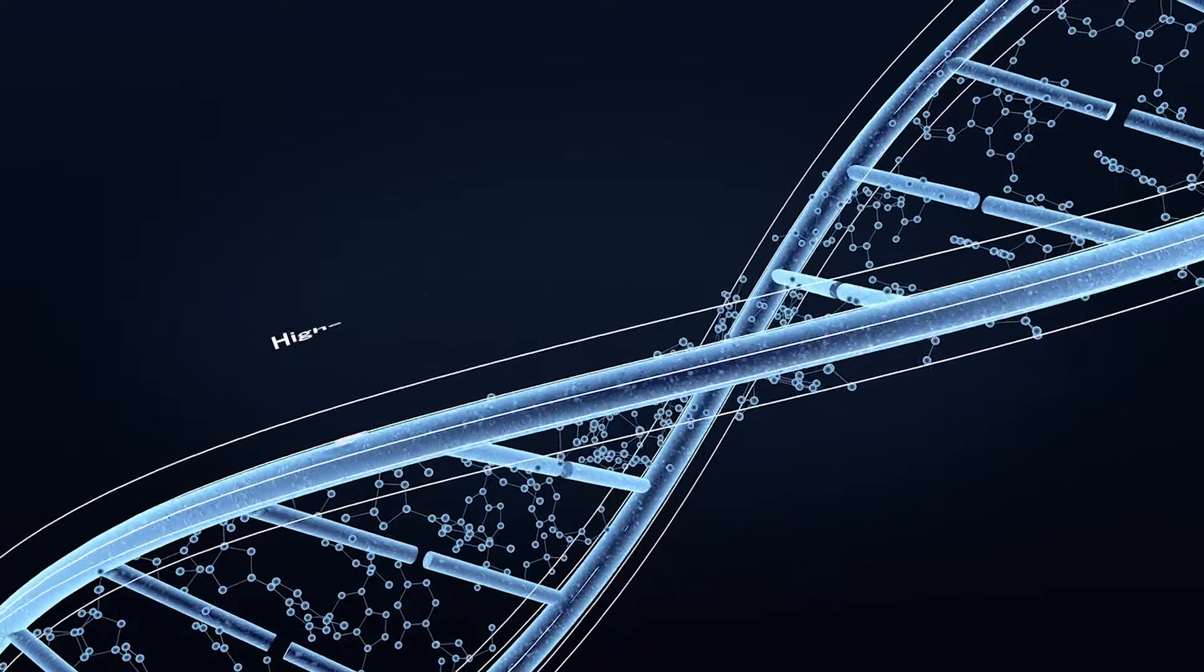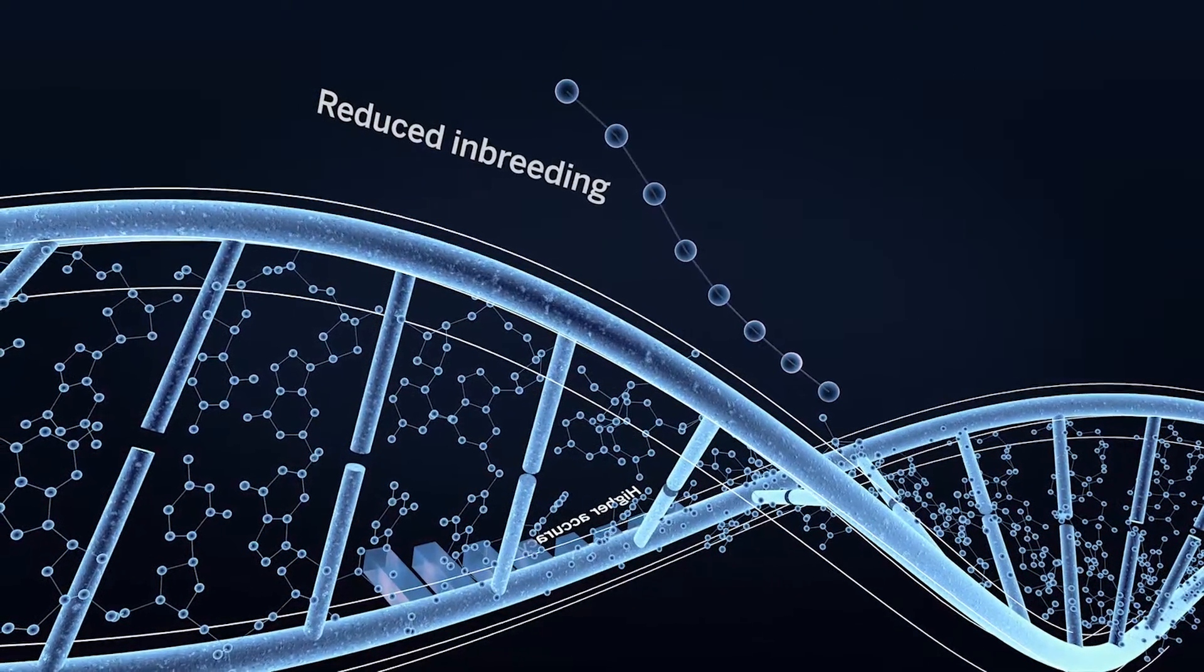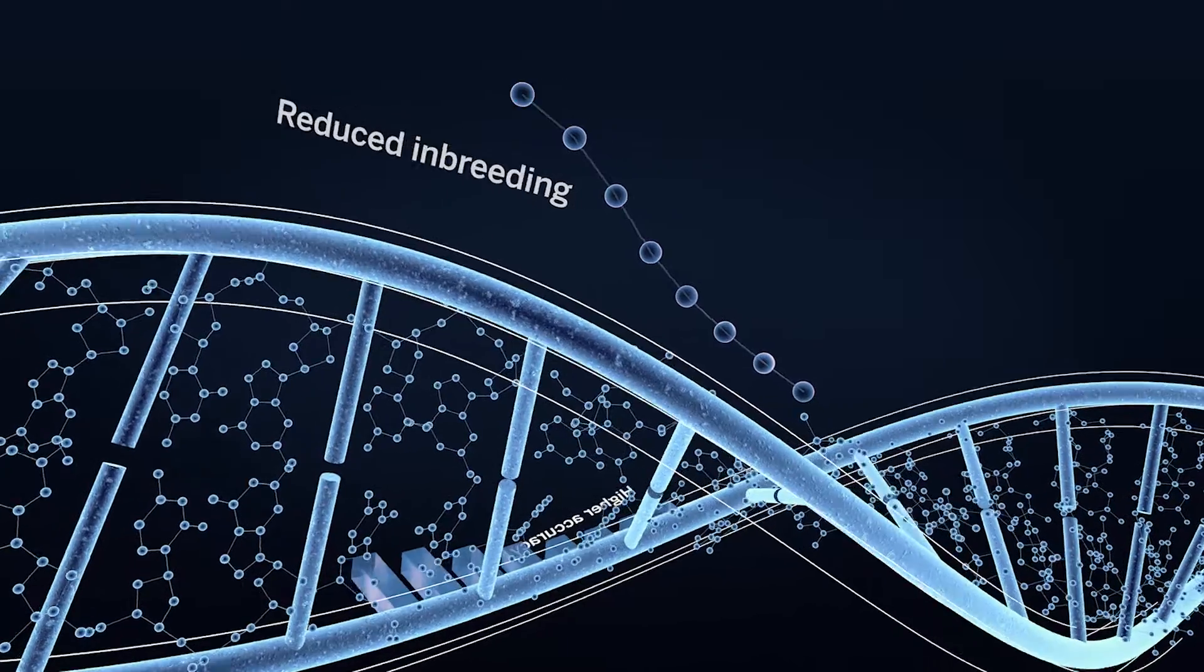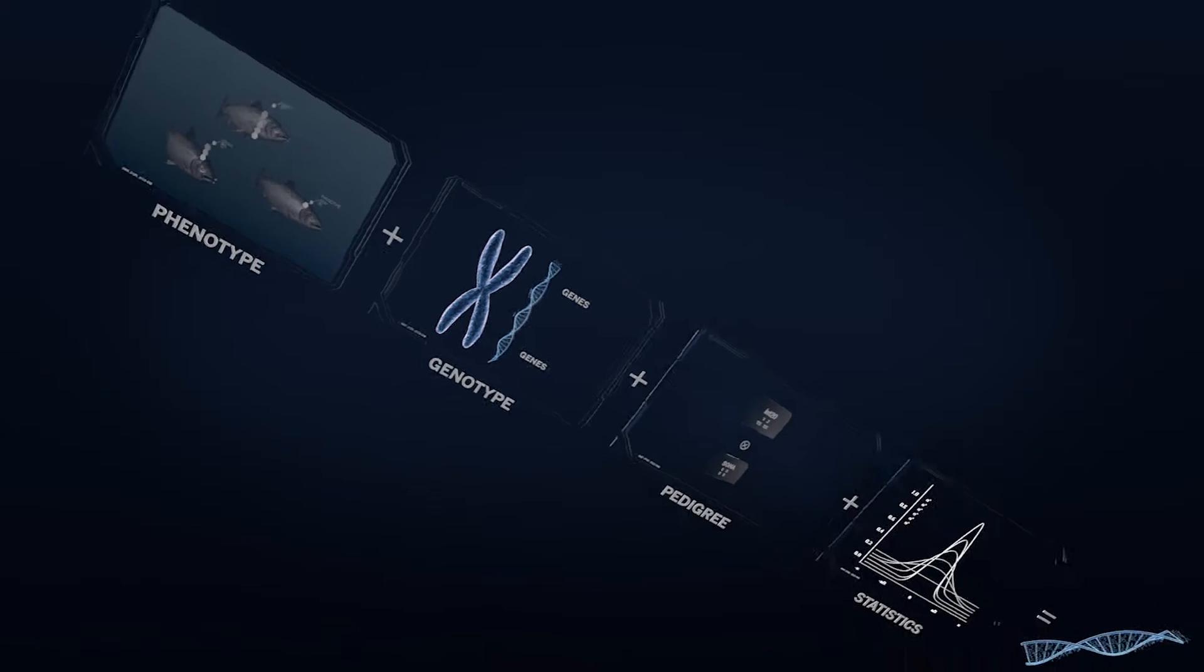In addition to increased precision when selecting breeding candidates, this new method also reduces inbreeding, as we can use fish from a larger number of families than before. We thereby increase the genetic gain towards sea lice resistance.